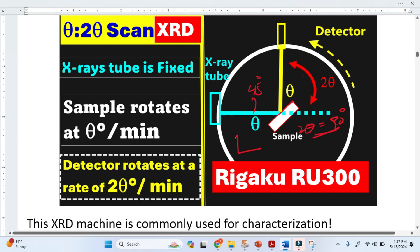This is why we usually see the range from 10 to 90 or 80 degrees in XRD or X-ray diffraction patterns. This is the angle we are interested in.